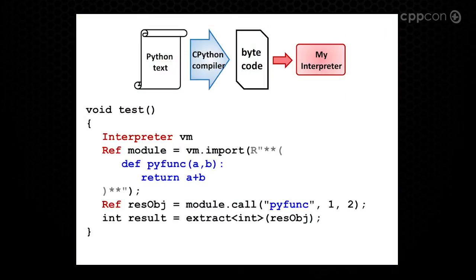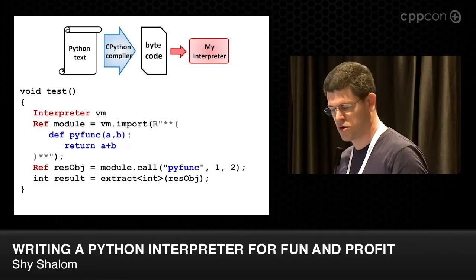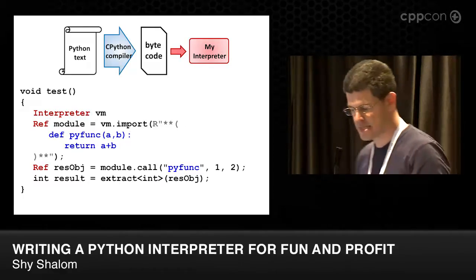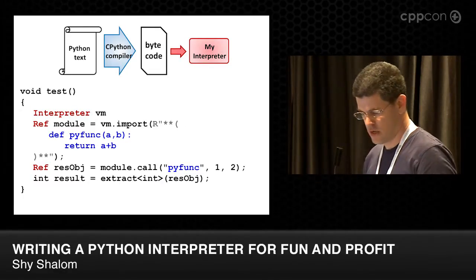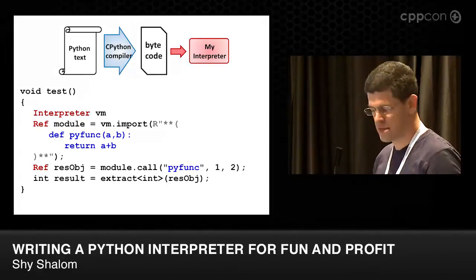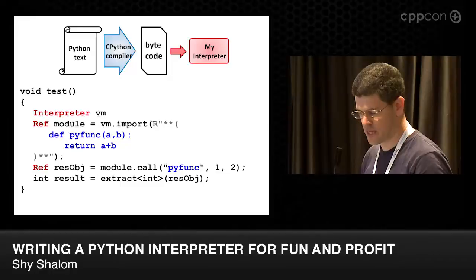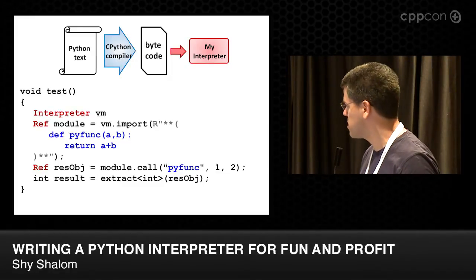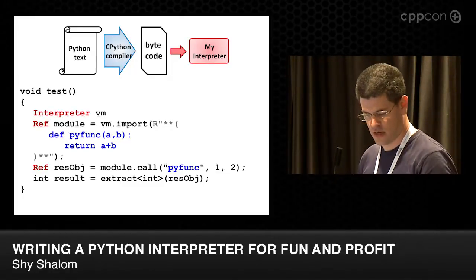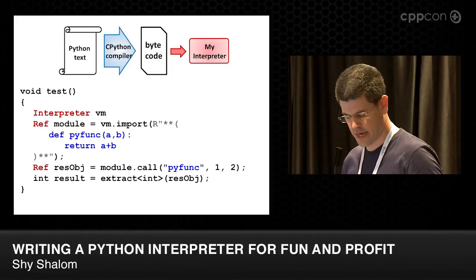We have an interpreter instance there, and I can import some Python code into it. The Python code is being compiled by the cPython compiler, and then executed into the interpreter. Next thing I can do once that's done, I can call into Python via C++ using this call method, and then extract the result from the return object into C++ again.